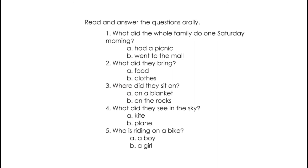Read and answer the questions orally. Number 1: What did the whole family do one Saturday morning? A, had a picnic. B, went in the mall. Correct, it's letter A. Number 2: What did they bring? A, food. B, clothes. Correct, it's letter A, food.